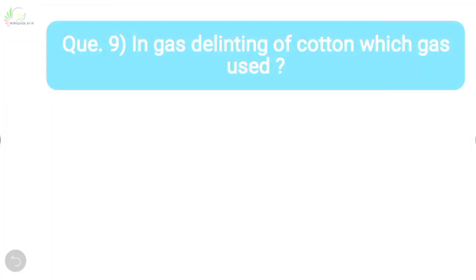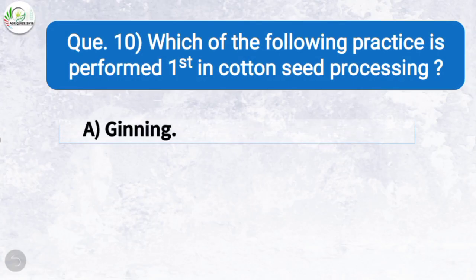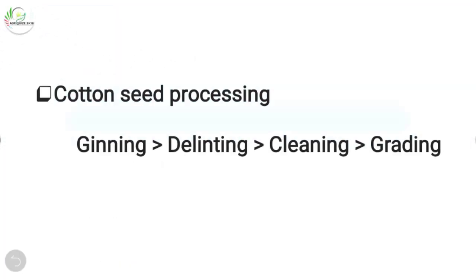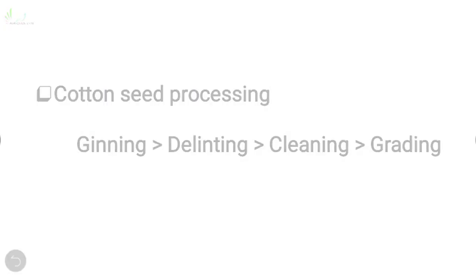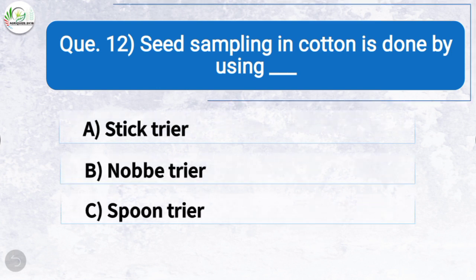Question nine: In gas delinting of cotton, which gas is used? The correct answer is option C: dry hydrochloric acid gas. Question ten: Which of the following practices is performed first in cotton seed processing? The correct answer is option A: ginning. The order is ginning, followed by delinting, then cleaning, and finally grading. Question eleven: In cotton, the size of submitted sample for grow-out test is — the correct answer is option D: 1000 grams.